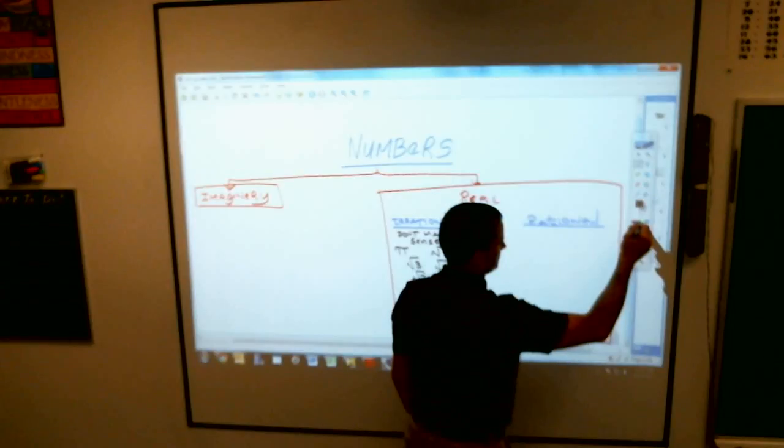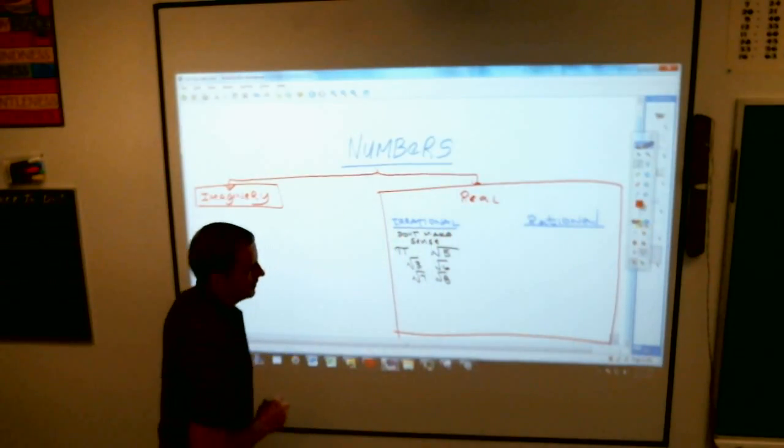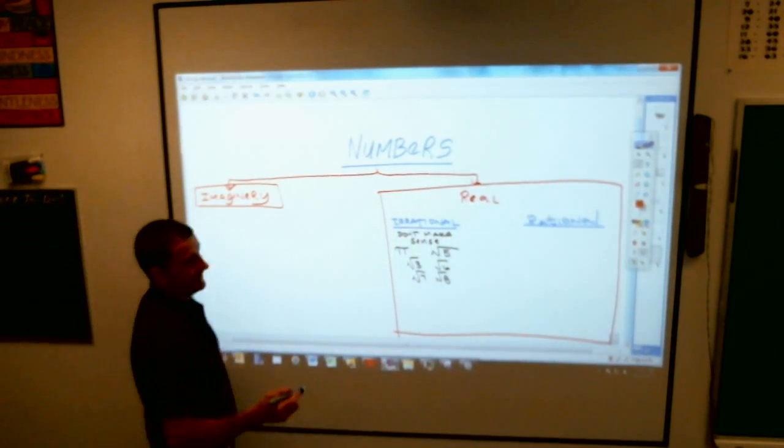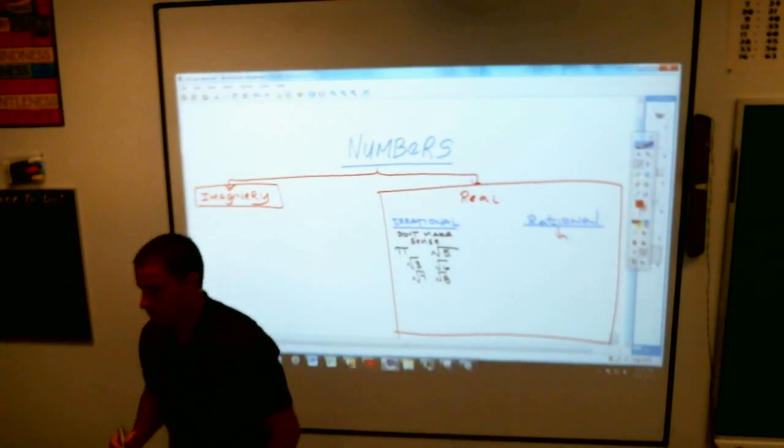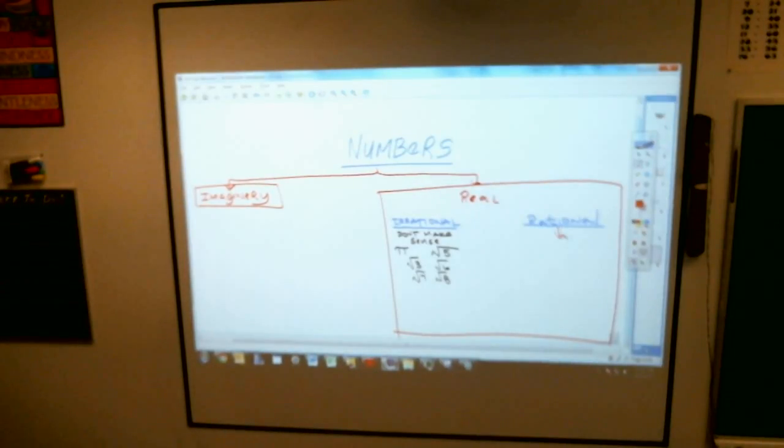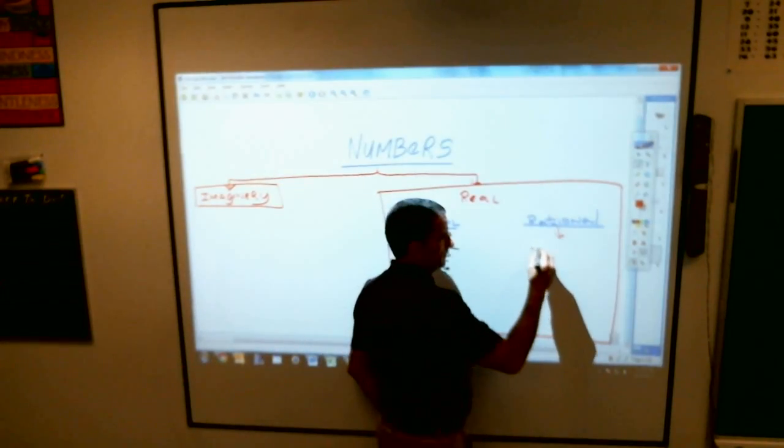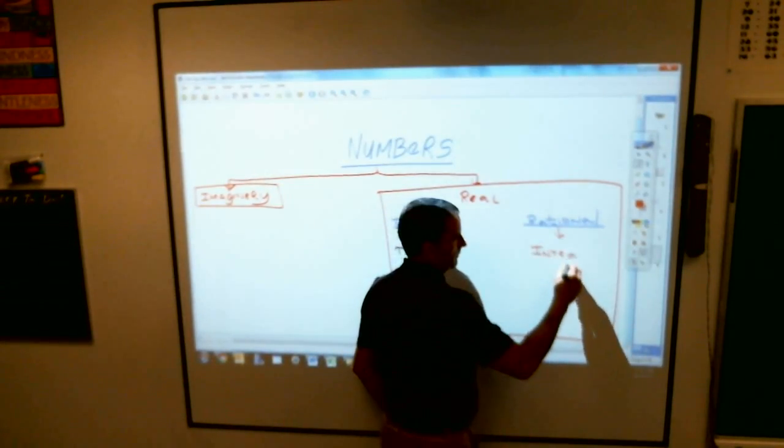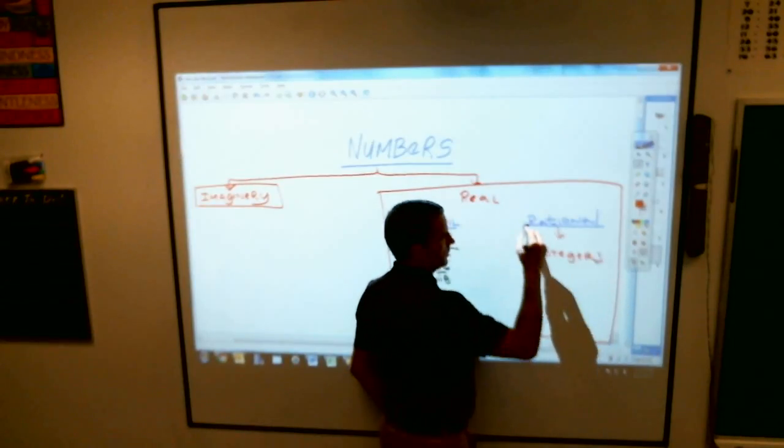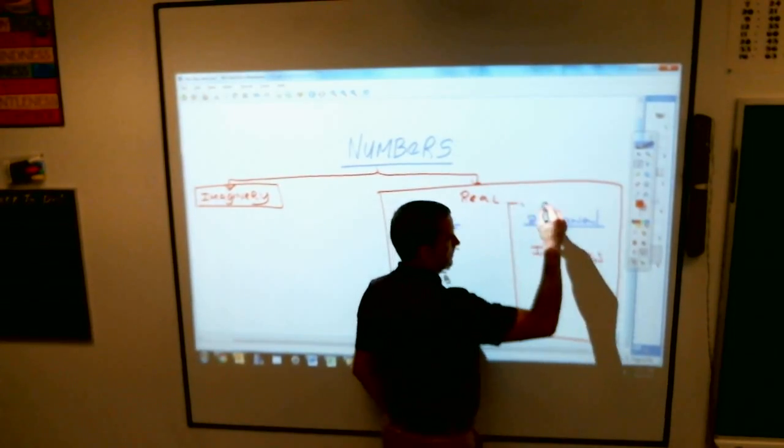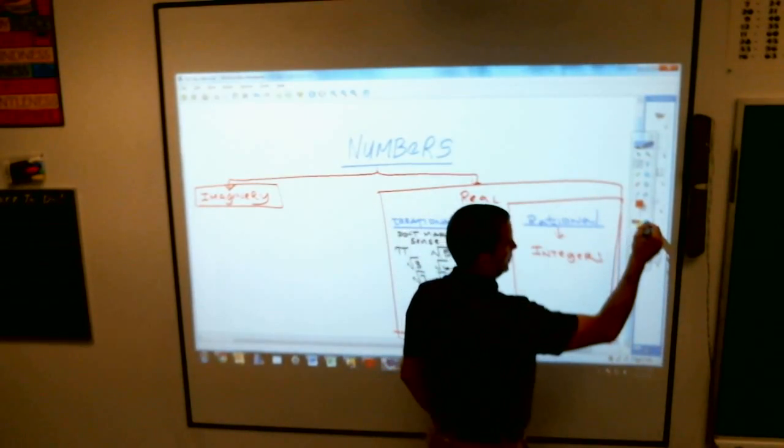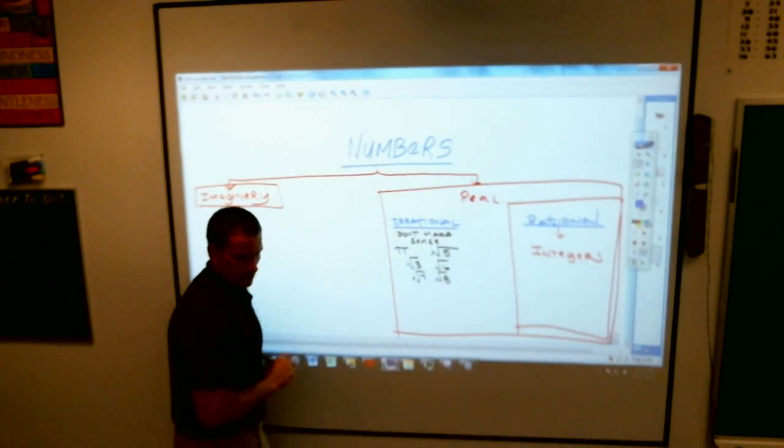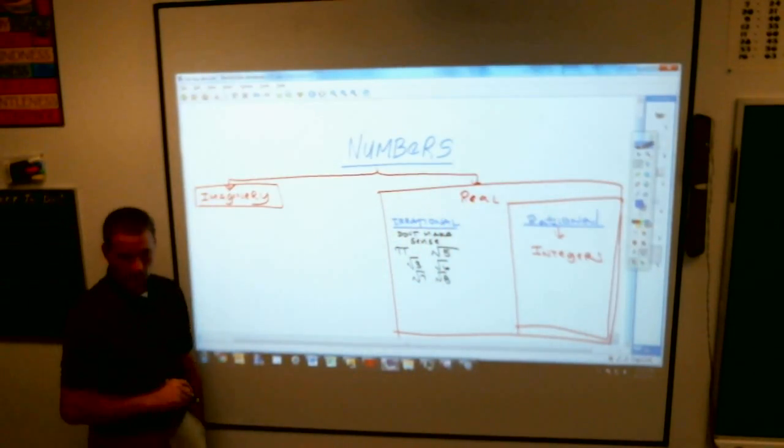Now under rational numbers, rational numbers technically are any numbers that can be made in a fraction. But under rational we have a little subset that are, let me make sure I get this right, they are the integers. So I'm going to draw a little box around the rationals. In the thing of rational numbers you have integers. Does anybody know what an integer is?